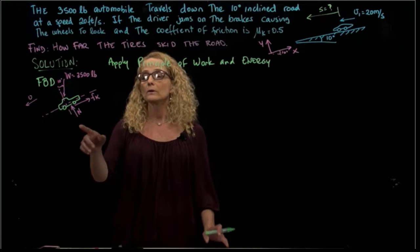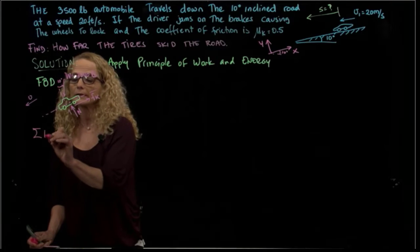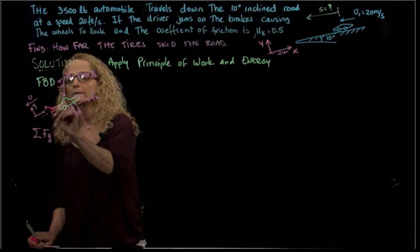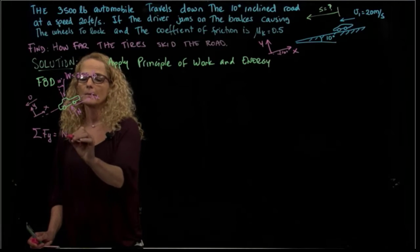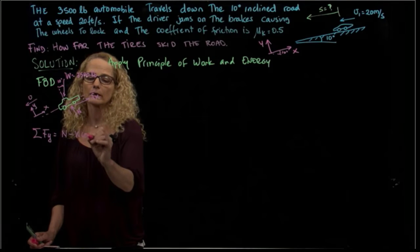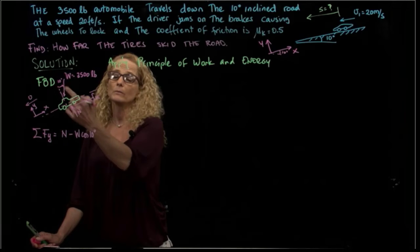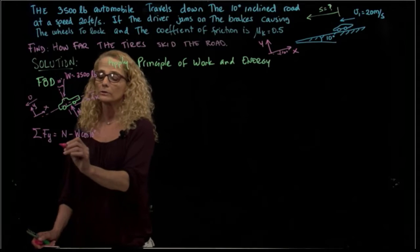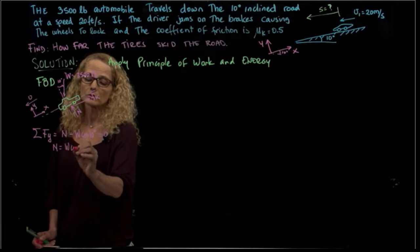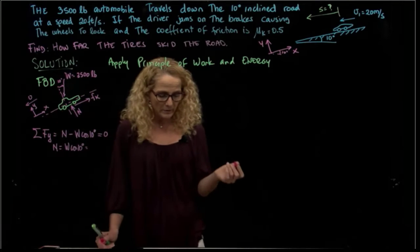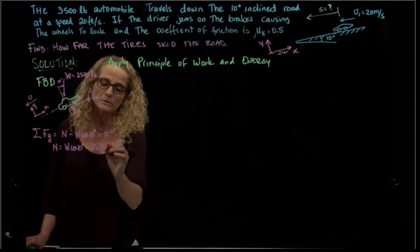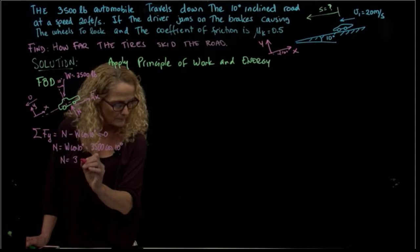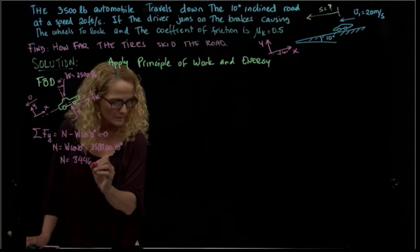Since the friction force is related to the normal, I'm going to sum forces in the y direction. Since I don't have any motion in that direction, this equation of motion converts actually into an equation of equilibrium. So my normal equals the weight times cosine of 10 degrees, and I can calculate that. It equals 3,500 times cosine of 10 degrees. The normal equals 3,446.8 pounds.